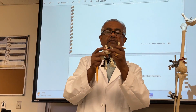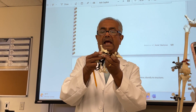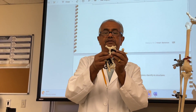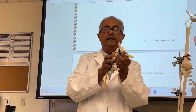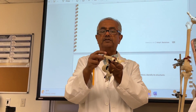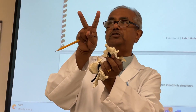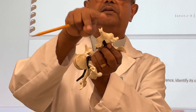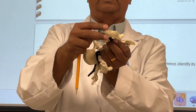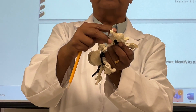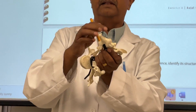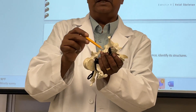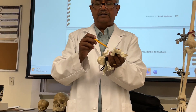The cervical vertebrae has two characteristic features. One is that its spinous process is bifid — you can see it's two. Bifid means two ends, so this is the bifid spinous process. The spinous process is the process that extends to the posterior side. This is the transverse process which goes to the lateral side.